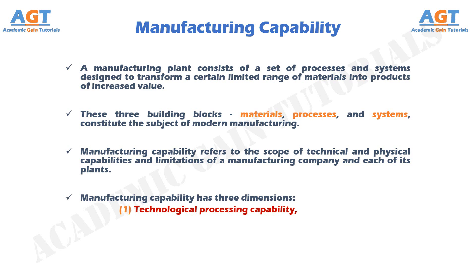Technological processing capability includes not only the physical processes, but also the expertise possessed by plant personnel in these processing technologies. Companies must concentrate on the design and manufacture of products that are compatible with their technological processing capability.